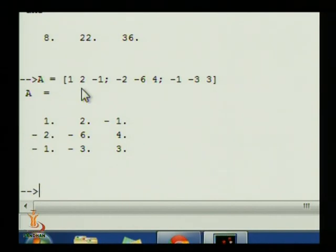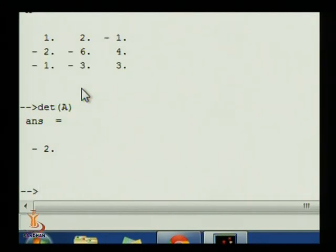For that, in Scilab, you do not have to do calculation by yourself. You just have to write one command called DET. That is, DET, small bracket, name the matrix, which is A over here, enter. It is minus 2. You can also do calculation by yourself to verify whether Scilab is giving the correct answer or not.